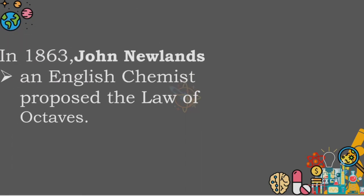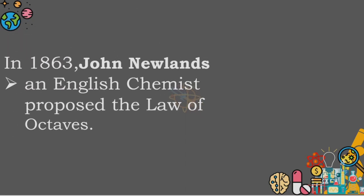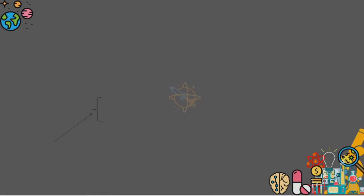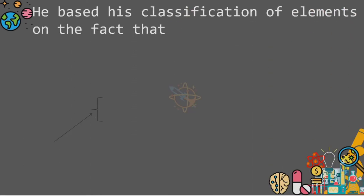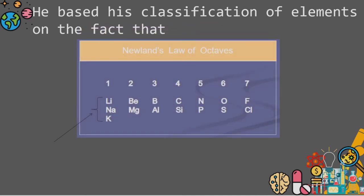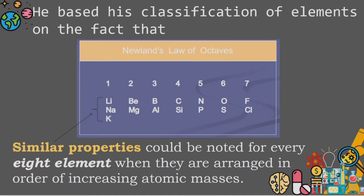In 1863, John Newlands, an English chemist, proposed the law of octaves. He based his classification of elements on the fact that similar properties could be noted for every eighth element when they are arranged in order of increasing atomic masses.